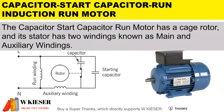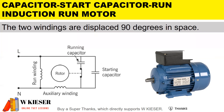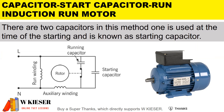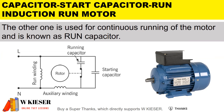In terms of operation, the capacitor start, capacitor run motor has a cage rotor and its stator has two windings: the main and auxiliary windings. The two windings are displaced 90 degrees in space from each other. There are two capacitors: one is used at the time of starting and is known as the starting capacitor, and the other is used for continuous running of the motor and is known as the run capacitor.